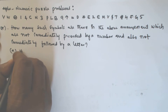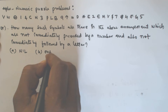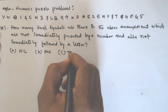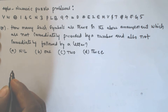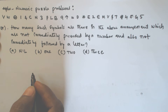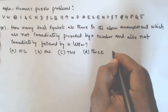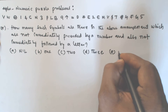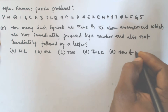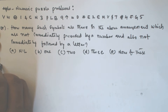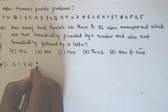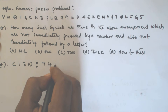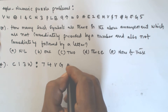Option A is nil, option B is 1, option C is 2, option D is 3, and option E is none of these. The second question is: C 1 3 W : 7 4 V G — in the same way as...